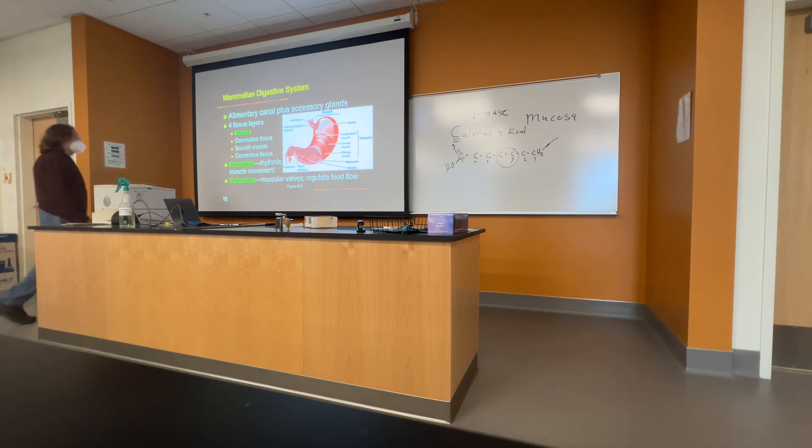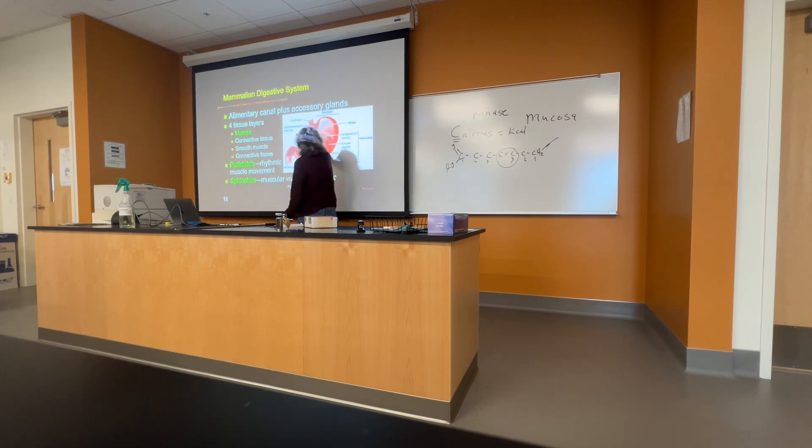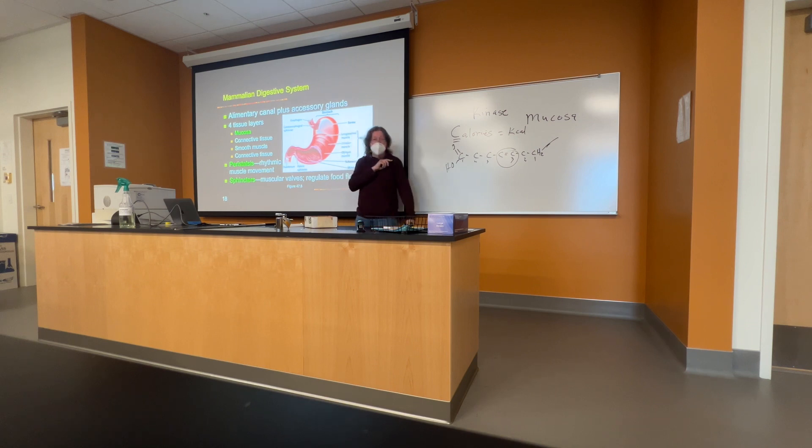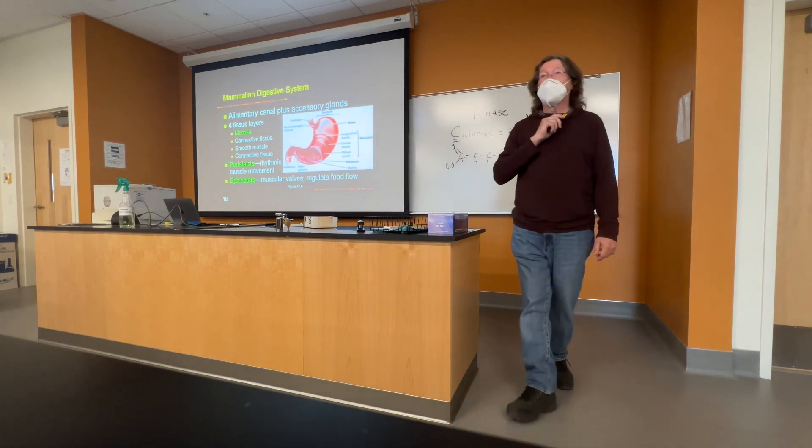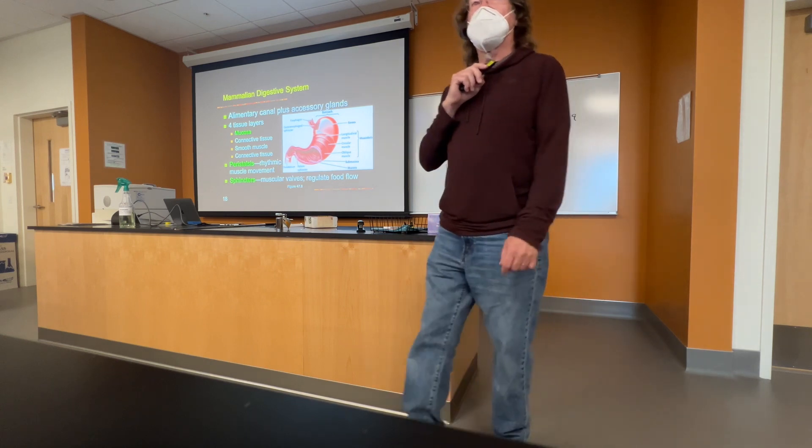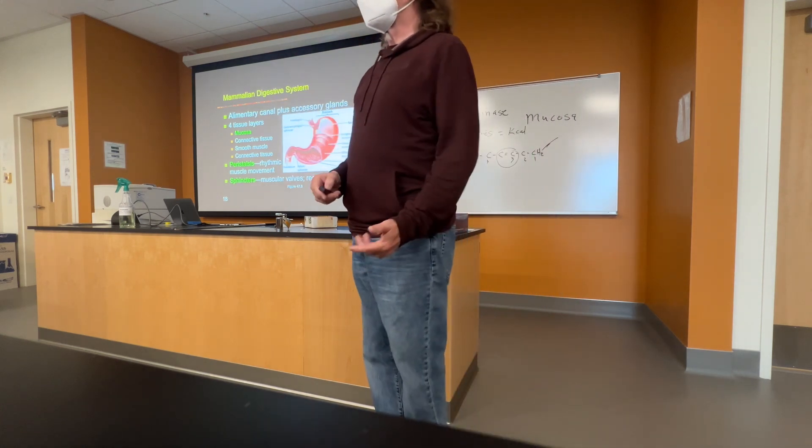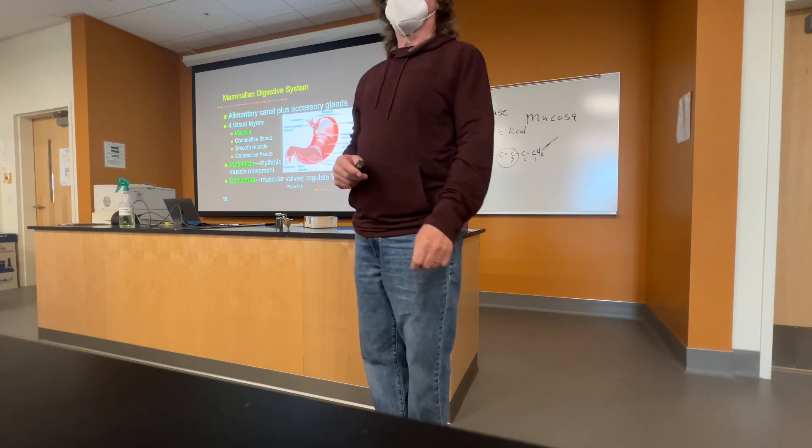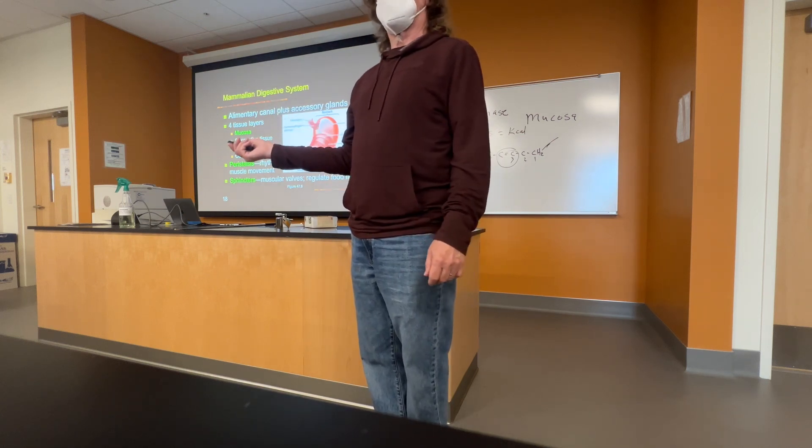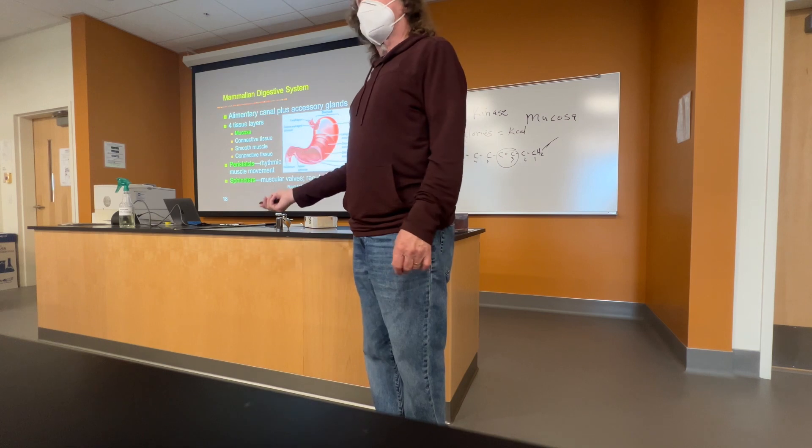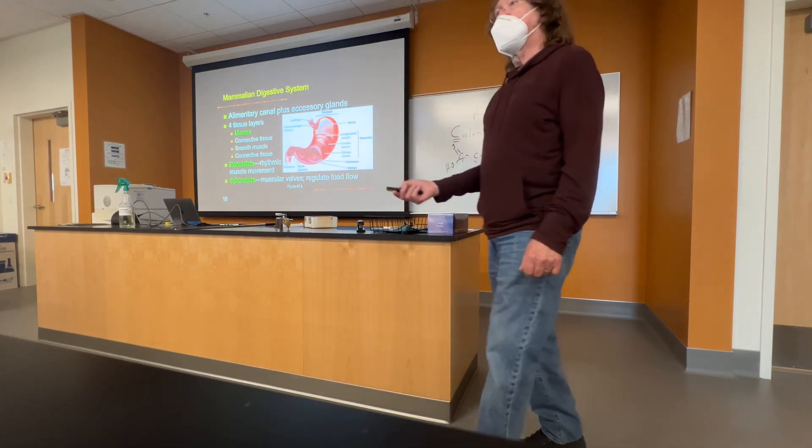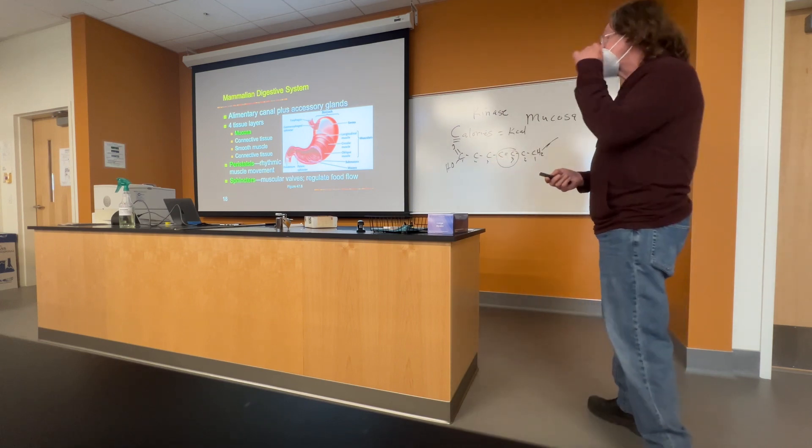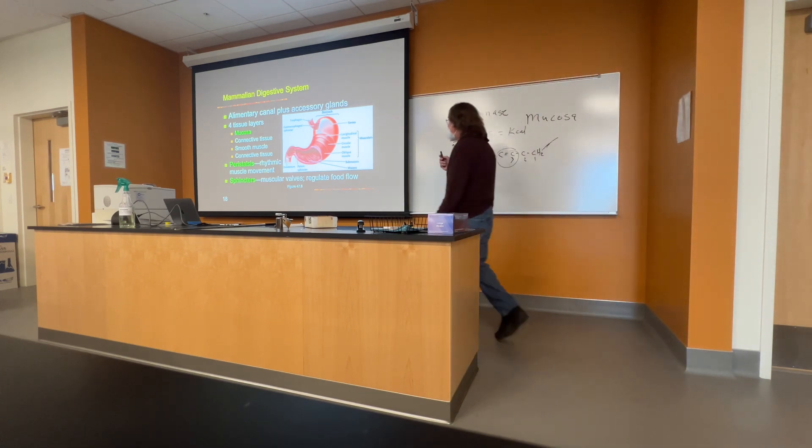That is the junction between the stomach and the first part of the small intestine, because things have to stay in the stomach until they've been processed to a certain degree before they can be released into the next part of the digestive system. So there's sphincters there. There's also a sphincter right here between the stomach and the esophagus, the esophageal sphincter. And this thing sometimes fails.